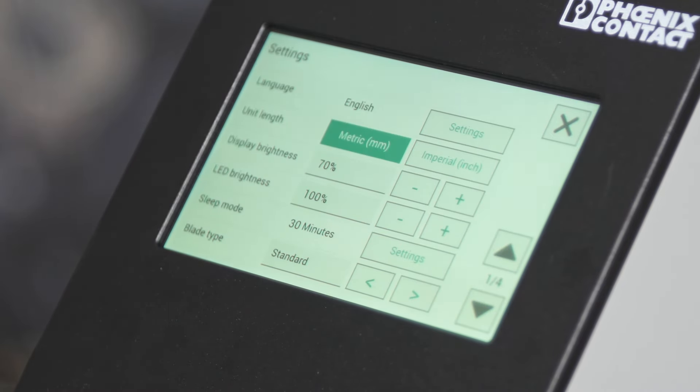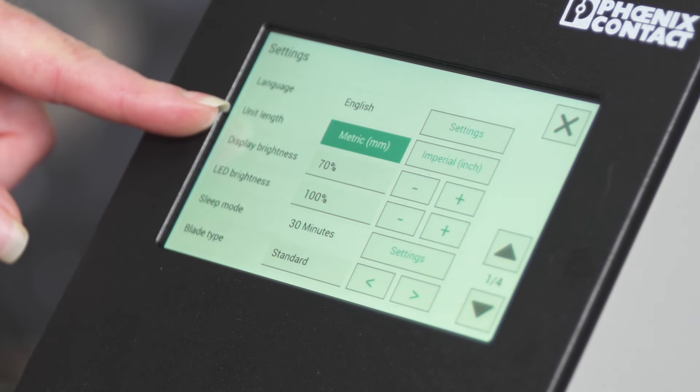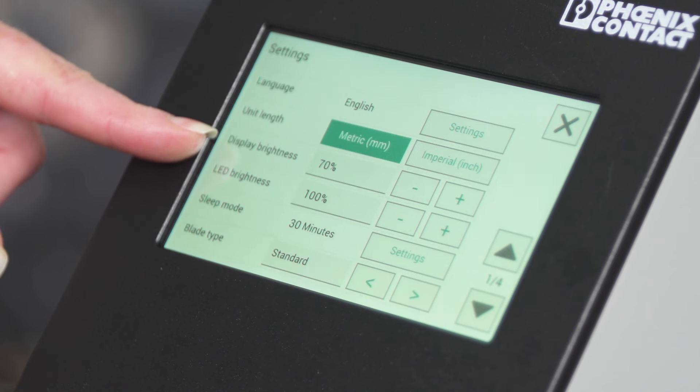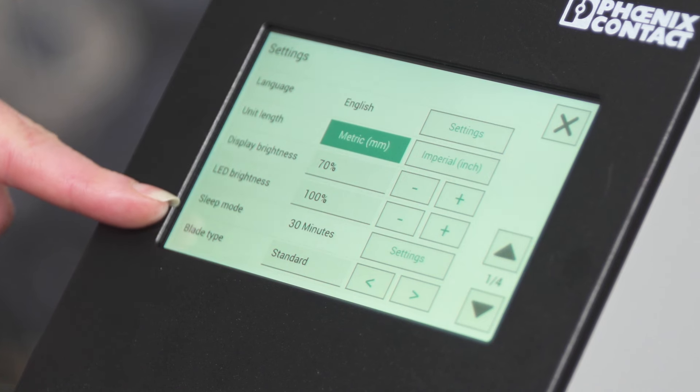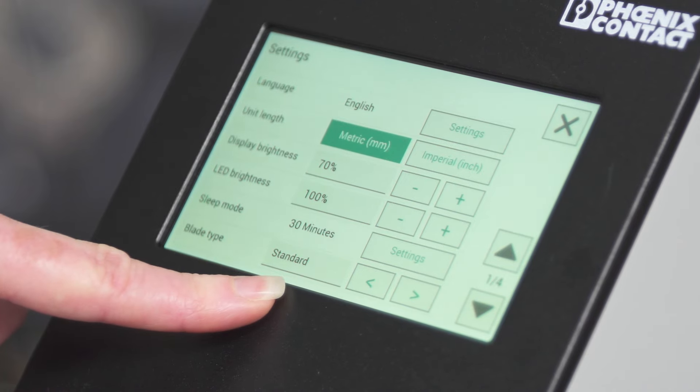Under the settings screen, you are able to make changes such as the language, the unit of measurement from metric to imperial, display and LED brightness, and the length of time until the machine will go to sleep. This is also where you would indicate the type of blade currently inserted in the machine.